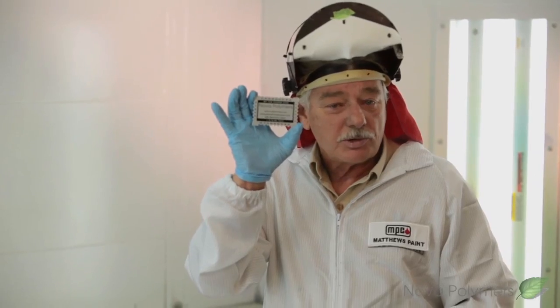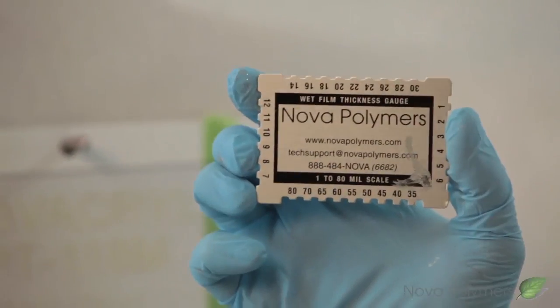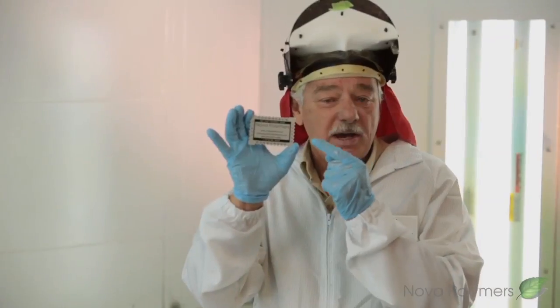I'm going to demonstrate how to use a wet film gauge. This particular gauge measures mill thickness from 1 to 80.